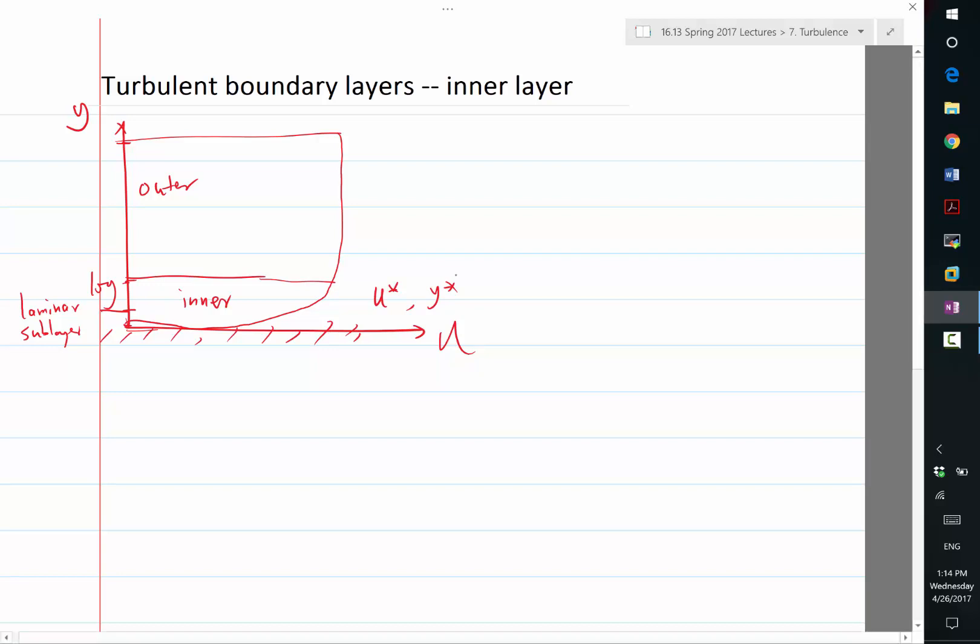These are both scales dependent only on the viscosity and the wall shear stress. U star is square root of tau over rho, and Y star is viscosity divided by U star. The inner layer is the layer that depends on viscosity.